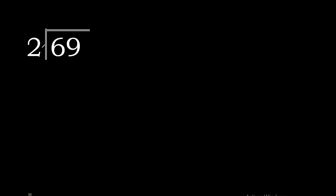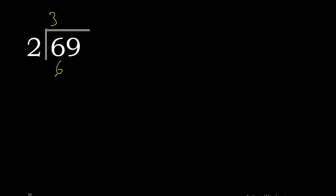69 divided by 2. 6 is not less than 2, therefore work with 6. 2 multiplied by 4 is 8 — excessive. Multiplied by 3 is 6. 6 minus 6 is 0, and 9 brings down.